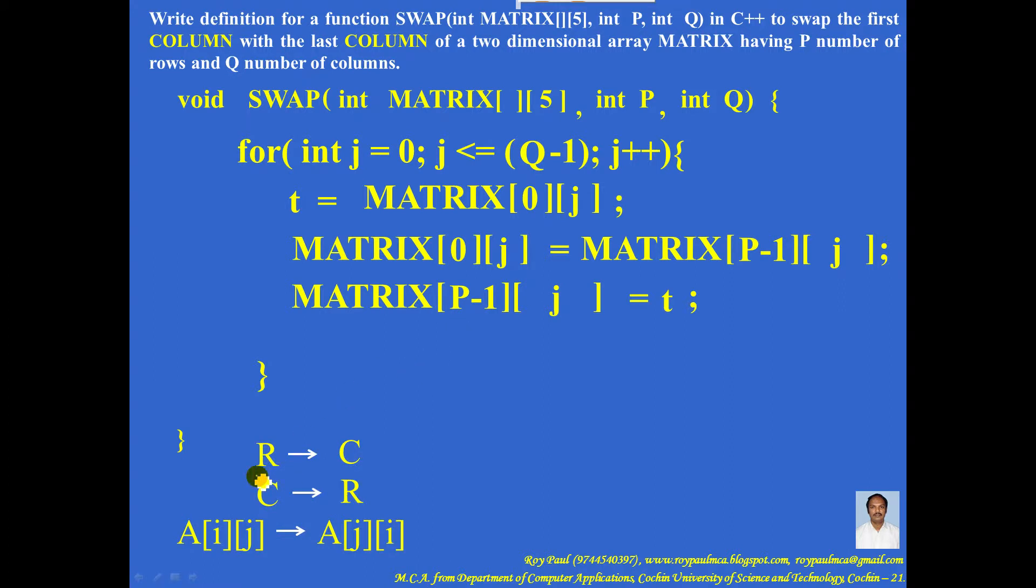the changes to be made are: number of rows will become number of columns, number of columns will become number of rows, and A of IJ should become A of JI.